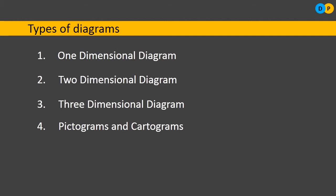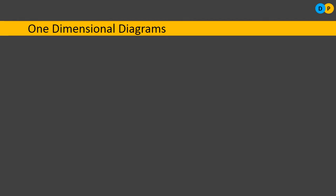Let us understand one-dimensional diagrams in detail. In a one-dimensional diagram, we consider only one axis. As you know, in two dimensions there are two axes — x-axis and y-axis — but here in one dimension, we can represent the diagram either on the x-axis or y-axis. Usually we will be considering the y-axis, by erecting the bars. So the diagrams drawn by considering only one dimension are referred to as one-dimensional diagrams.